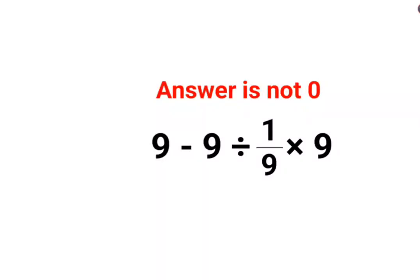Welcome everyone. Today we are going to understand why the answer for this question is not supposed to be 0. We have 9 - 9 ÷ 1/9 × 9.